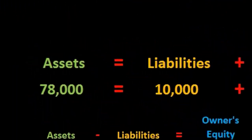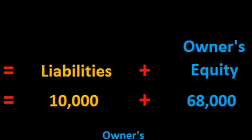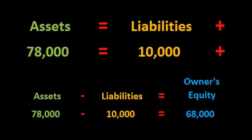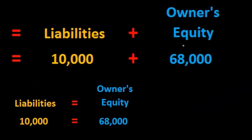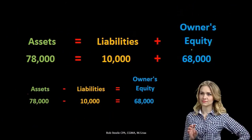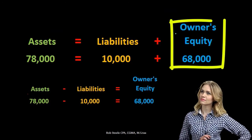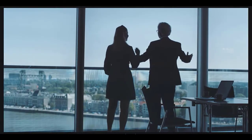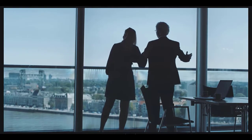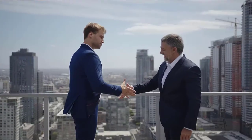The accounting equation is assets equal liabilities plus equity. Remember that this equity section could be named differently depending on the type of entity. If we're a sole proprietor, we will have owner's equity. If it is a partnership, we will have partner's equity. And if we have a corporation, we will have shareholders' equity.